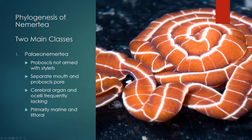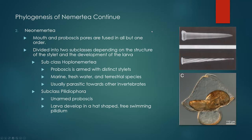One example is Tubulanus superbus. In the class Neonemertea, we start to see more specialized features. They all share a mouth opening with the proboscis pore. The first subclass is the Hoplonemertea — these are the ones that typically have stylets. The proboscis is armed with distinct stylets that are morphologically different depending on the species and habitat. These animals are also usually parasitic to other invertebrates.